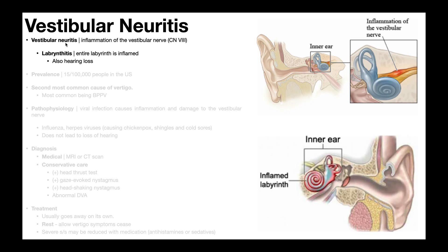Vestibular neuritis is different from labyrinthitis. Labyrinthitis is inflammation of the entire labyrinth, and this is also associated with hearing loss. Pure vestibular neuritis is not associated with hearing loss — it involves only inflammation of the vestibular nerve.